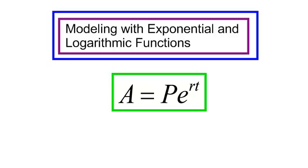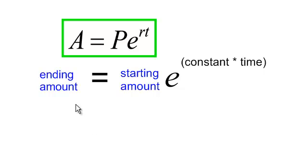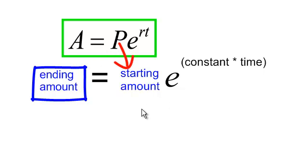Let's look at this PERT formula a little bit more. A was the amount of money that we would end up with after we put it in the bank, let it sit there for a while, get interest compounded on it continuously. It was our ending amount. P was our starting amount, the principle. How much money are we going to put into the bank?